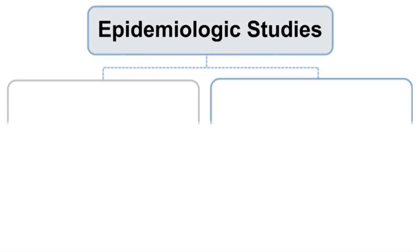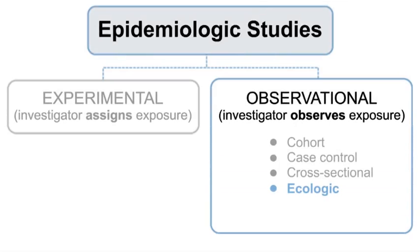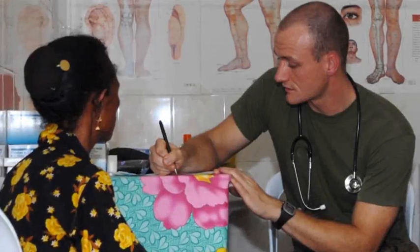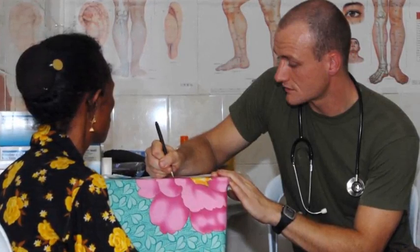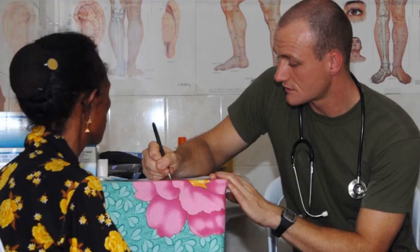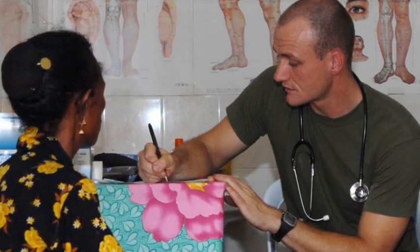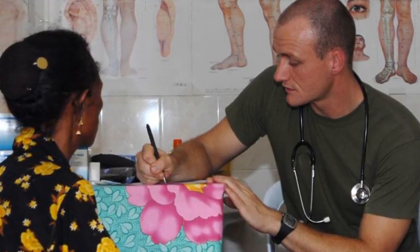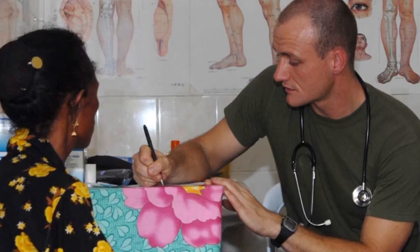Ecologic studies are a type of observational study design — one of the four types of observational study designs covered in this course. In each of the observational study designs covered so far — the cohort, case-control, and cross-sectional study designs — exposure data and health outcome data are generally collected from each study participant. There are some exceptions, but they won't be discussed here.